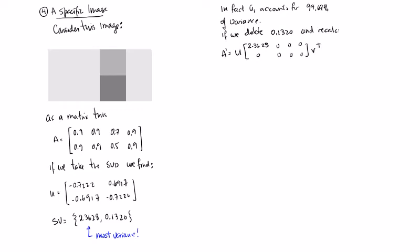Now sigma is 2 by 4, so what we're doing here is we're deleting this entry right here. This is what we get. So it's worth writing this out.